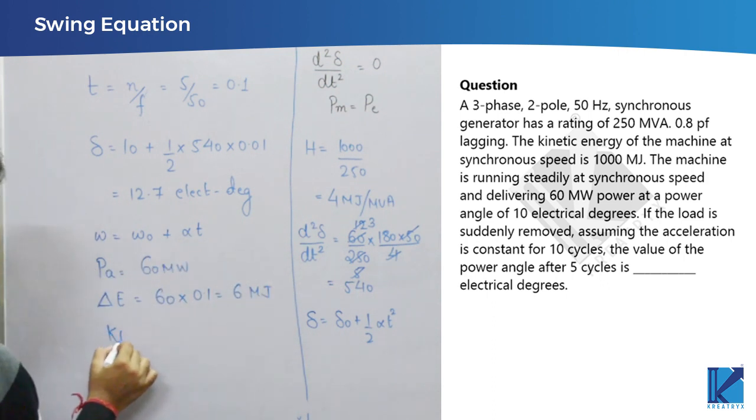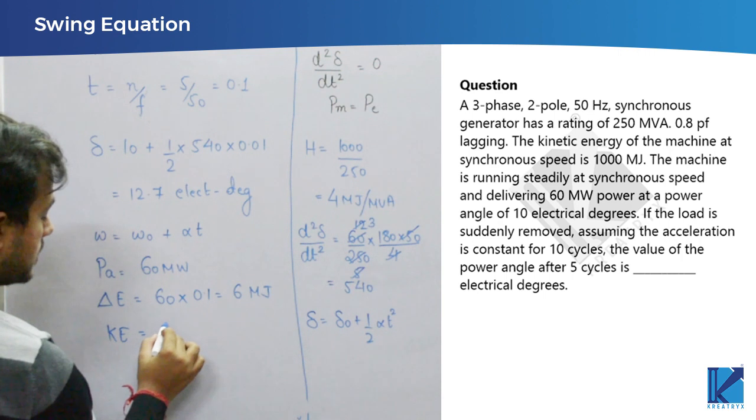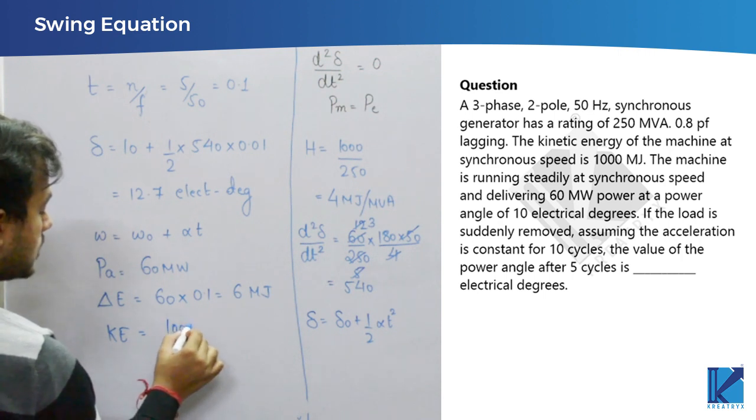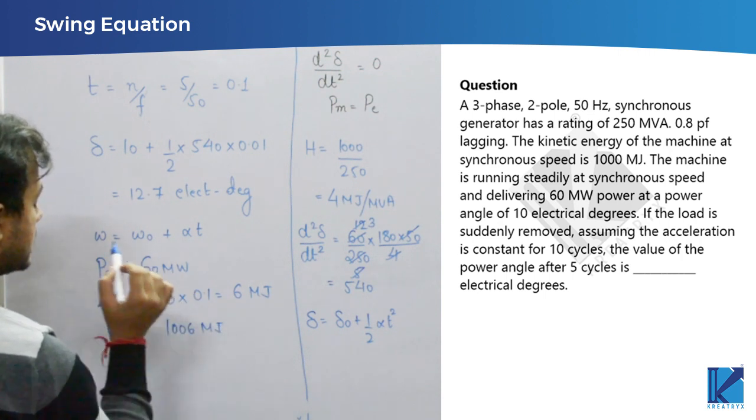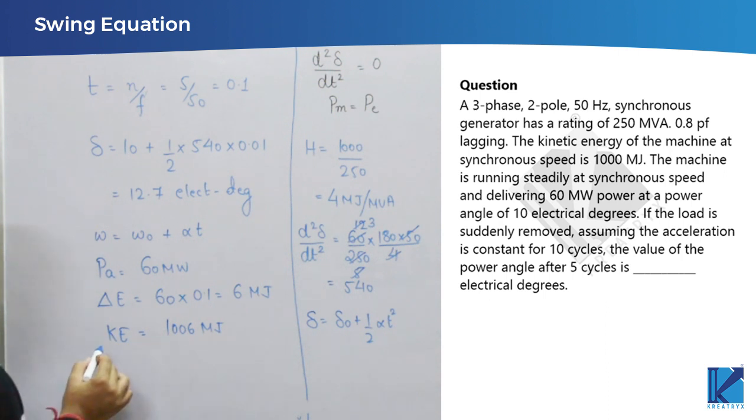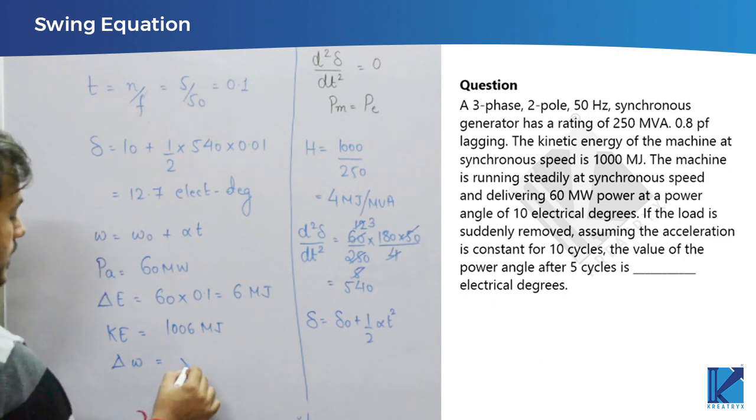So, now what does kinetic energy become? Kinetic energy becomes, earlier it was 1000, now 1006 megajoules. And based on kinetic energy we can find the change in speed, because speed is proportional to under root of kinetic energy.